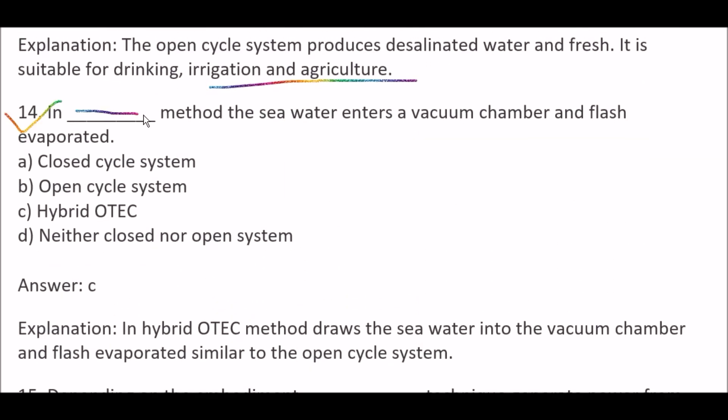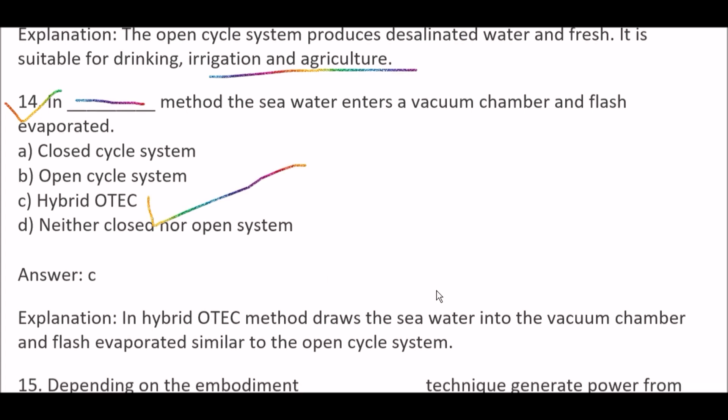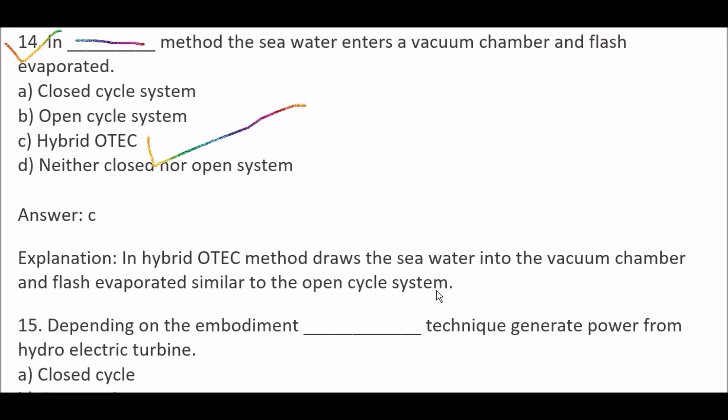Next question: In which method does sea water enter a vacuum chamber and flash evaporator? Option A, closed cycle system; Option B, open cycle system; Option C, hybrid OTEC; Option D, neither closed nor open system. Right answer is Option C, hybrid OTEC. In the hybrid OTEC method, sea water is drawn into a vacuum chamber and flash evaporator, similar to the open cycle system.